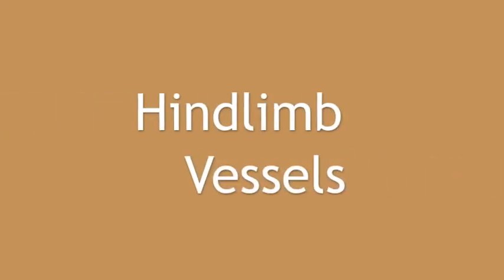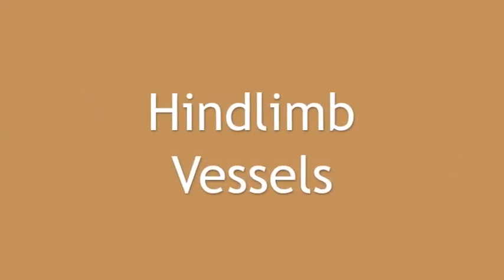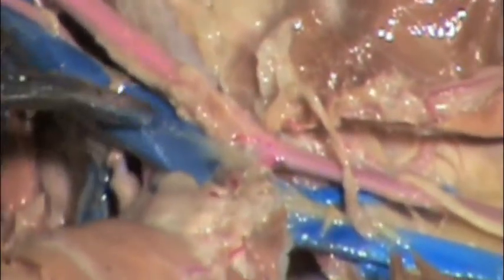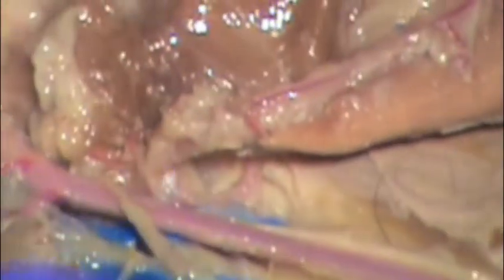The hind limb vessels come from the iliacs in the pelvic cavity, and here you see the external iliac vein. This marks the end of the pelvic cavity and the beginning of the femoral region.